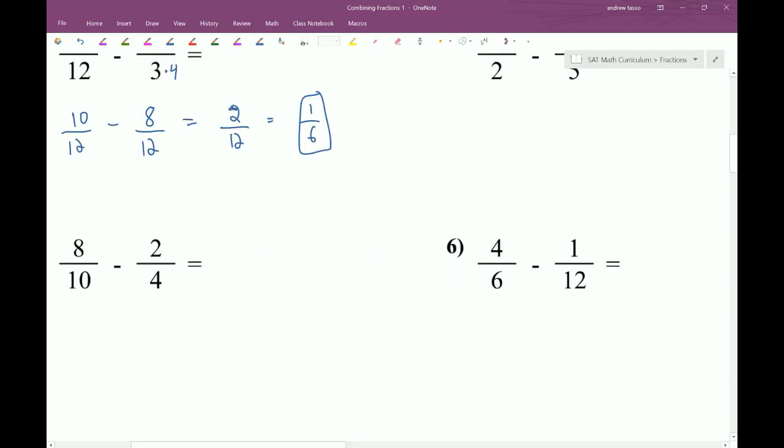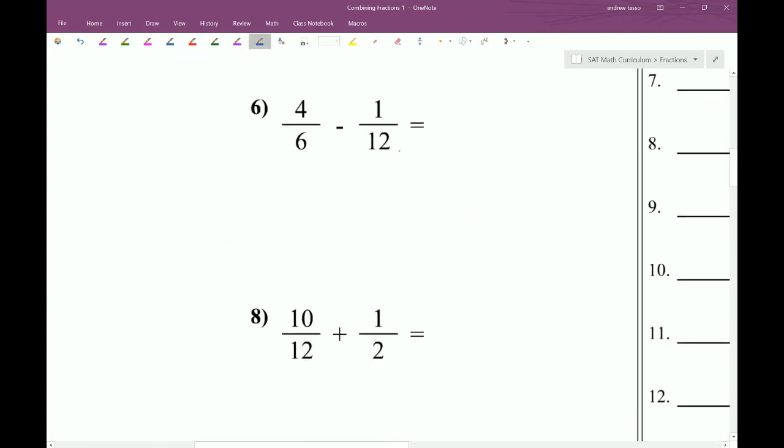Here's another simple example where one is a multiple of the other. So we think about what number needs to be multiplied to make them equal, and we add that on the top and bottom through multiplication. So we end up with 8 over 12 minus 1 over 12, which gives 7 over 12. Pretty straightforward.